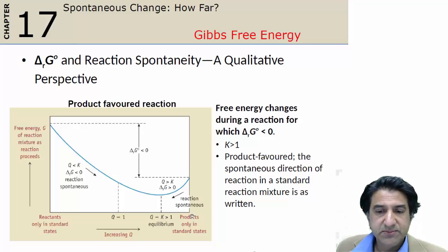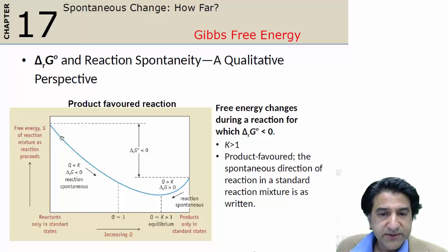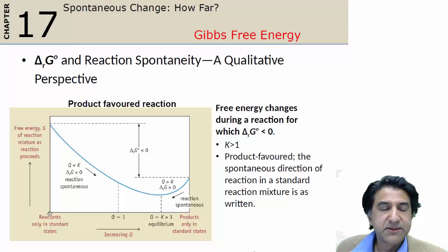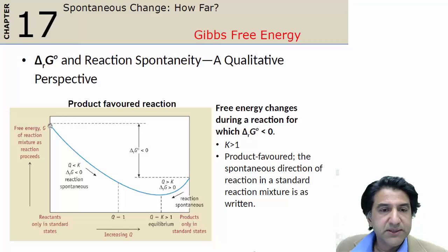Likewise, if we start with 100% products in their standard states, those products react backwards towards the equilibrium point until we have some reactants. Again, we reach equilibrium. So that's what's happening with this free energy graph. Now look at the difference between the left-hand side and the right-hand side. Here is the G value for reactants in their standard states, and likewise here for products. So the difference between the right-hand side and the left-hand side is delta G0.